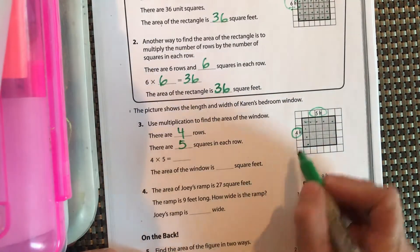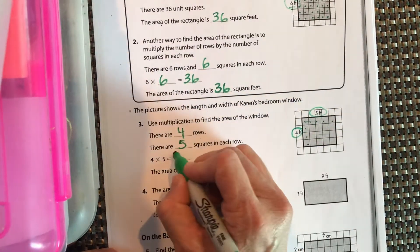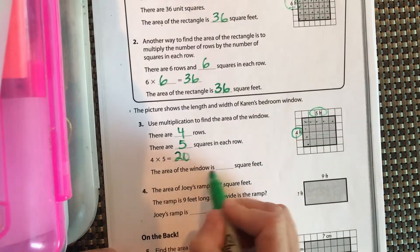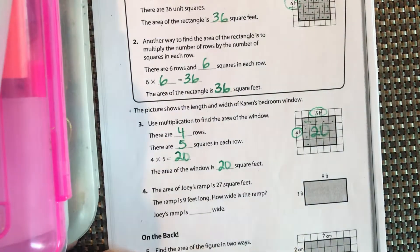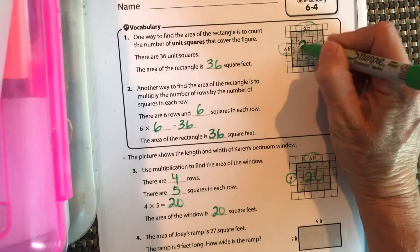4 times 5, so 4 times 5 equals 20. So the area of the window is 20 square feet. You can write that inside, that it's 20. Up here, this one was 36.